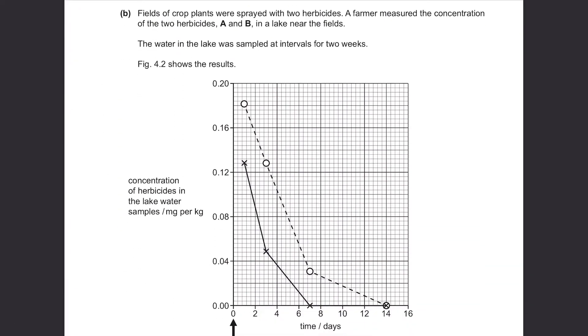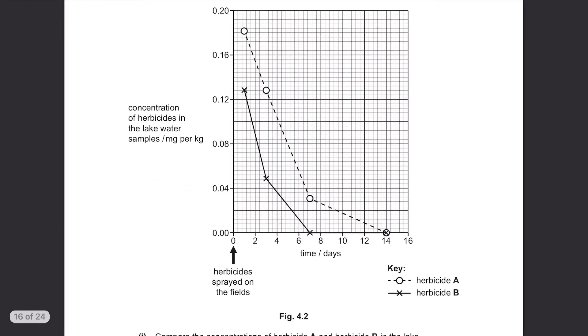Part B. Fields of crop plants were sprayed with two herbicides. A farmer measured the concentration of the two herbicides A and B in a lake near the fields. The water in the lake was sampled at intervals for two weeks. Figure 4.2 shows the results. When the farmer first sprayed the herbicides, there was a high concentration of it in the nearby lake. But after a few days, it slowly started to decrease for both herbicides A and B.